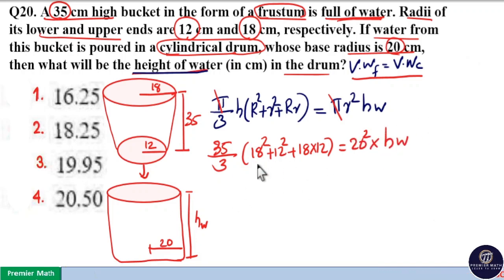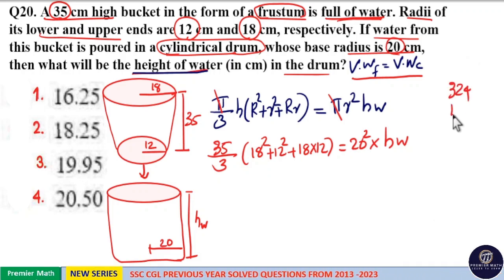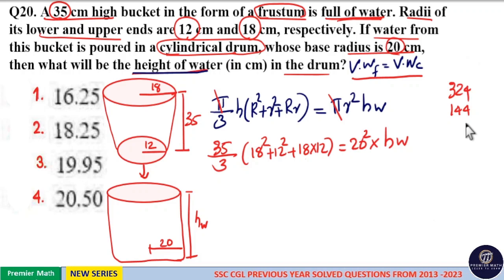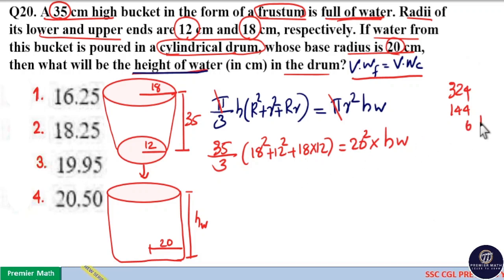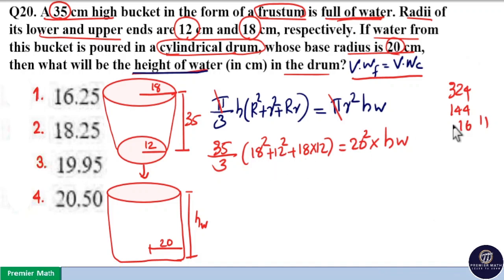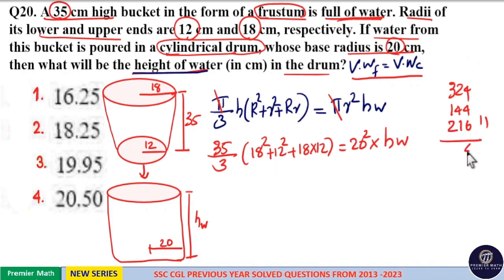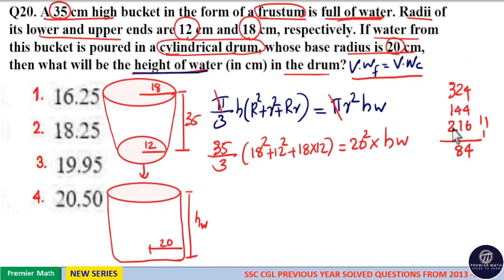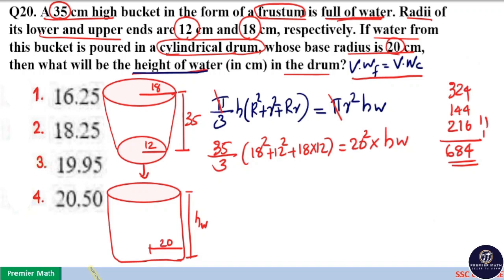Now calculating: 18² = 324, 12² = 144, and 18 × 12 = 216. The sum is 324 + 144 + 216 = 684.